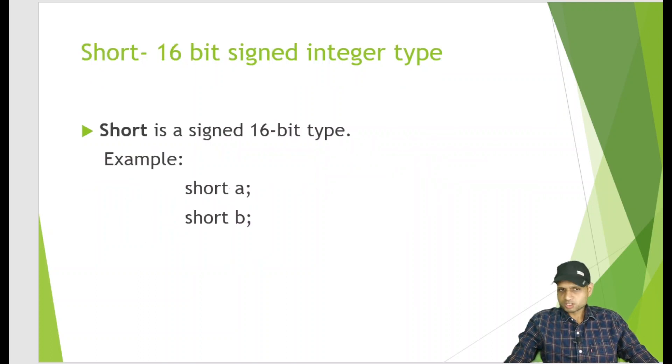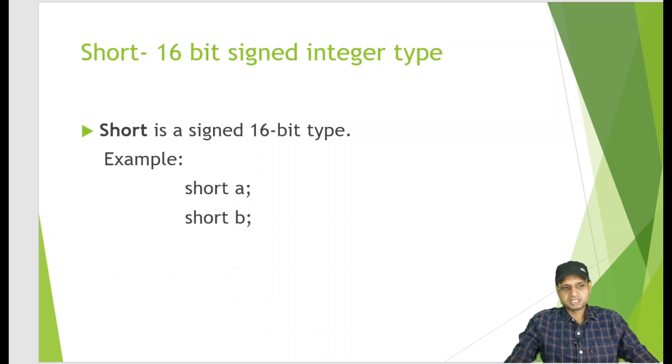The next one is short. Short is a 16 bit signed integer type. If we want to define short in a Java program, we do it this way. Next one is integer. The most commonly used integer type is int in Java. It is a signed 32 bit type. For example, int a b c, int num add sum. How we define integer type variables.